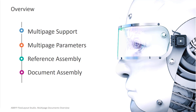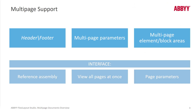We'll also cover checking document assembly right in FlexiLayout Studio. Headers are groups used to identify the first page of multi-page documents, and footers are groups used to identify the last page. When you build the layout, there is a header group and footer group by default. Once multi-page support is active, an element will search for its related data on all pages of a multi-page document.